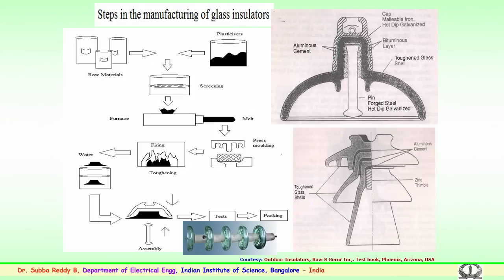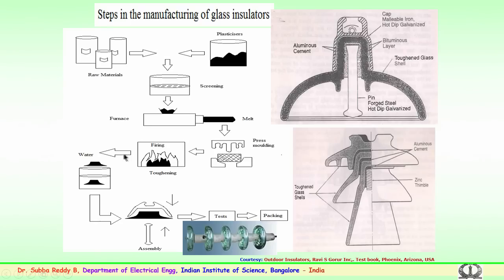This flowchart shows the entire manufacturing process of glass insulators. Raw materials are collected, stored, and powdered using a screening mechanism. They are sent to the furnace where they are melted, then carefully molded using cast iron molds for the required shape. For toughening, the insulators are sent for firing, after which they are dropped into a chamber containing water.